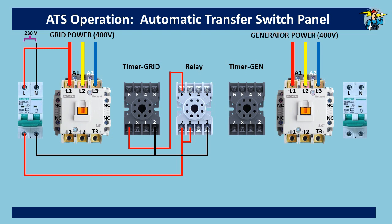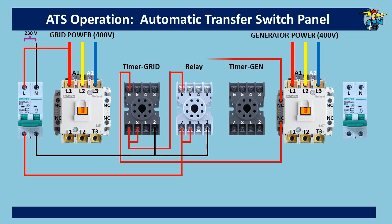On the grid timer, port 7 is connected to common port 8. After the set time delay, outlet port 6 gets power. Port 6 of the grid timer is then connected to the grid contactor operating coil A1 — on the way, it goes through the normally closed port of the generator contactor auxiliary contact, as interlocking of the two contactors is required as a safety precaution. Neutral wire is connected to A2 of the grid contactor to complete the grid side control circuit wiring.